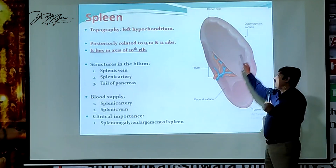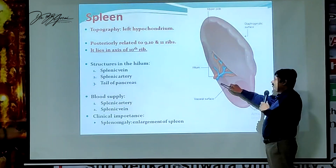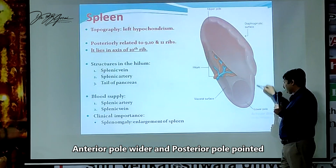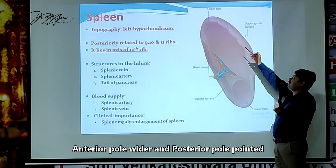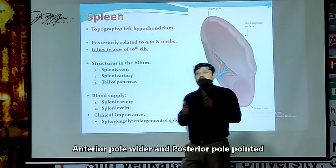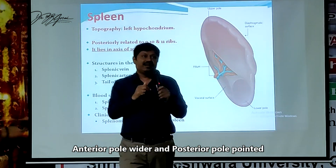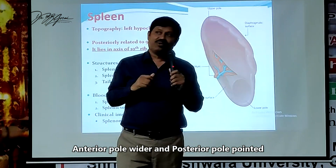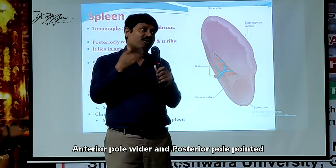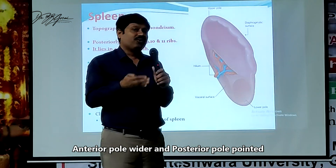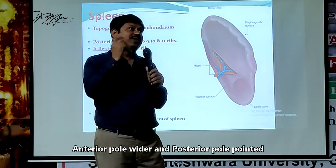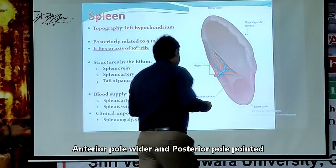You can see the upper and lower parts. The anterior part is wide and rounded, and the posterior part is narrow and pointed. So the anterior pole is wide and the posterior pole is pointed. This is how you distinguish the two poles of the spleen.